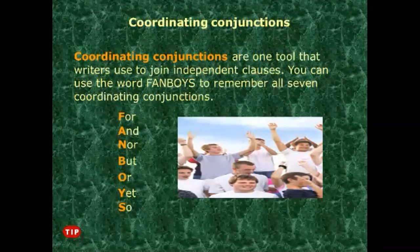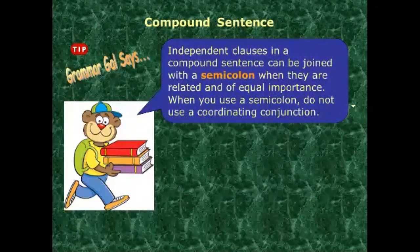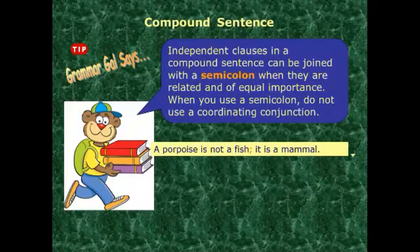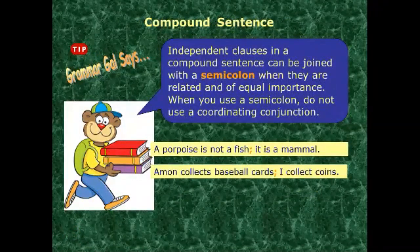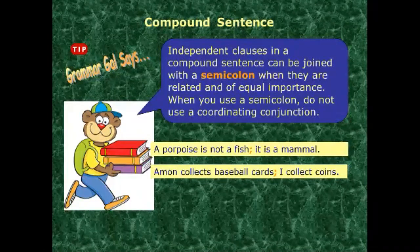A tip to be careful about: independent clauses in a compound sentence can also be joined with a semicolon instead of a coordinating conjunction — but only when the clauses are related and of equal importance. Example: 'A porpoise is not a fish; it is a mammal.' Both pieces of information are equally important, so we join them with a semicolon.